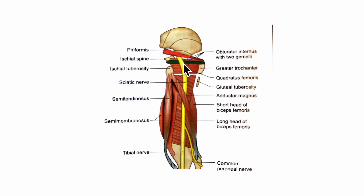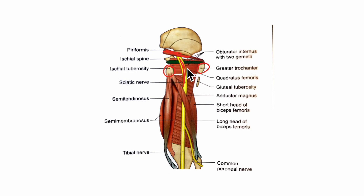It runs downwards with a slight lateral convexity, passing between the ischial tuberosity and the greater trochanter. Superficially or posteriorly it is related to the gluteus maximus muscle.